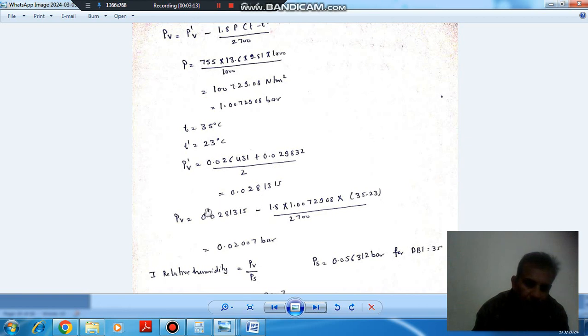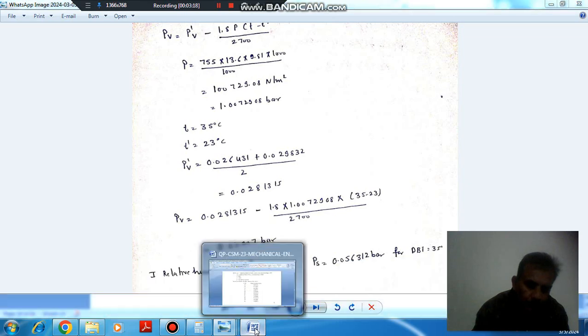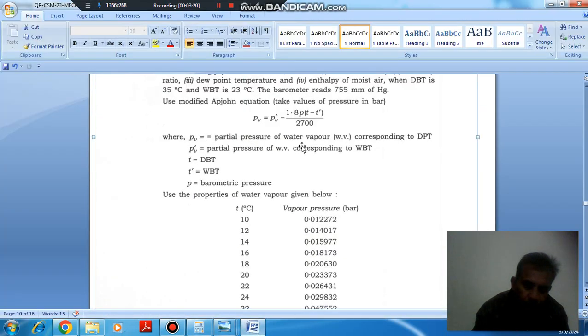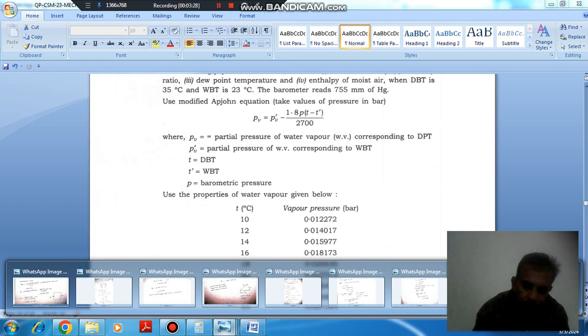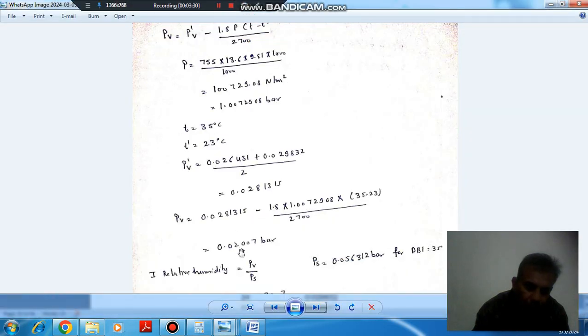Putting the values, we can find out the partial pressure of water vapor corresponding to DBT. This comes out as 0.027 bar.